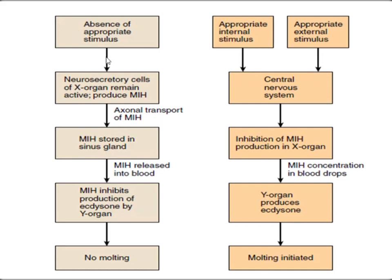Looking at the flow sheet diagram: when no appropriate stimulus is present, the X organ produces more MIH, which is stored in the sinus gland, and MIH inhibits ecdysone production by the Y organ — so there is no molting. When an appropriate stimulus arrives, MIH production is decreased, the Y organ becomes active, releases ecdysone, and molting occurs.